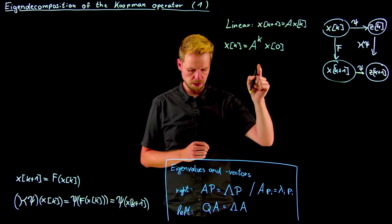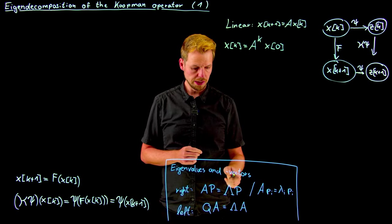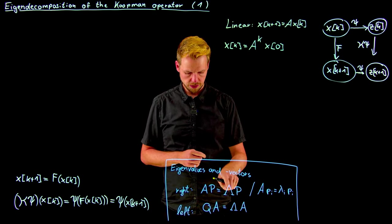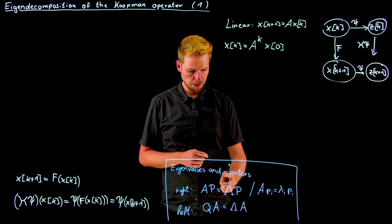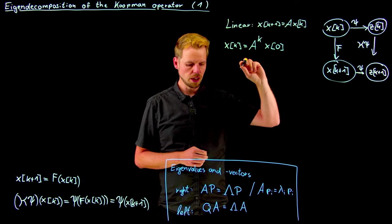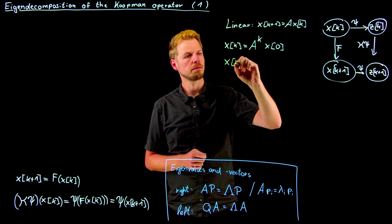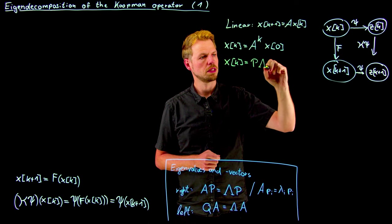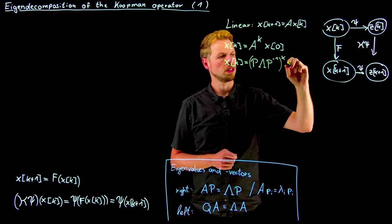So what we can do now is we can simply introduce the eigenvalue decomposition. So let's assume we have linearly independent eigenvectors, then this matrix is invertible, which means the matrix A can be expressed as P times lambda times P inverse. And so what we get is x_k = P times lambda times P inverse raised to the kth power times x_0.